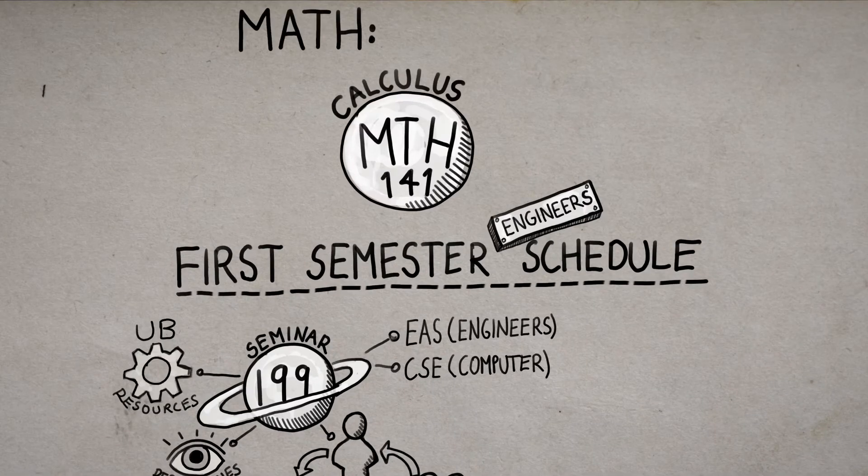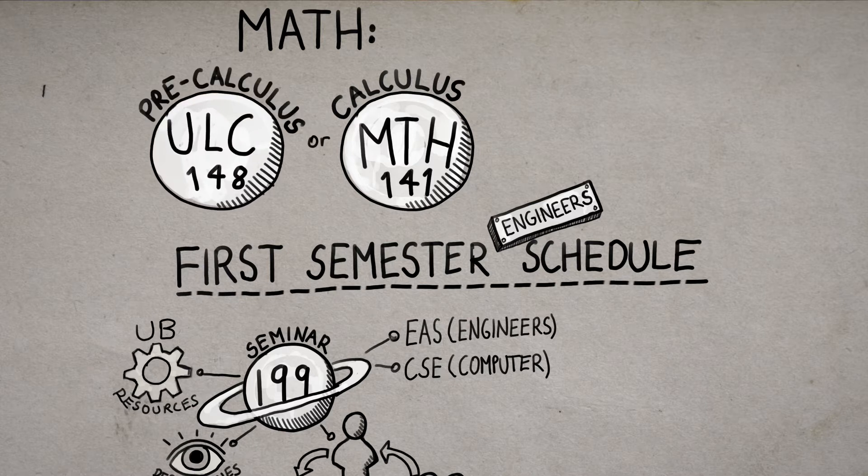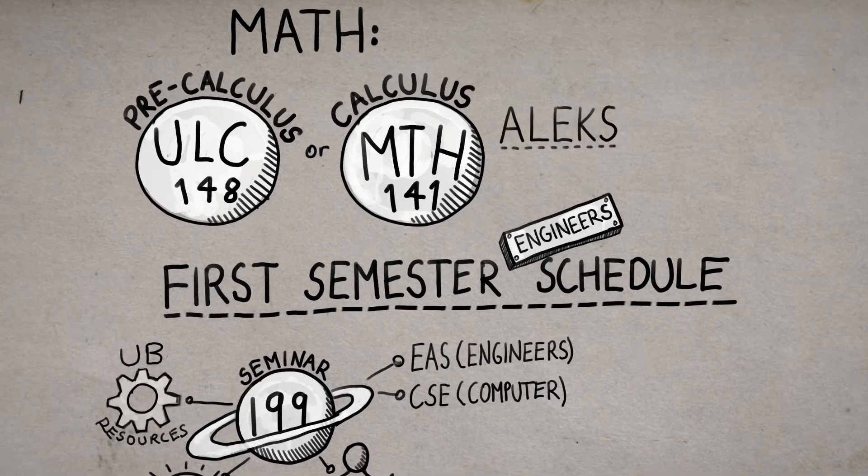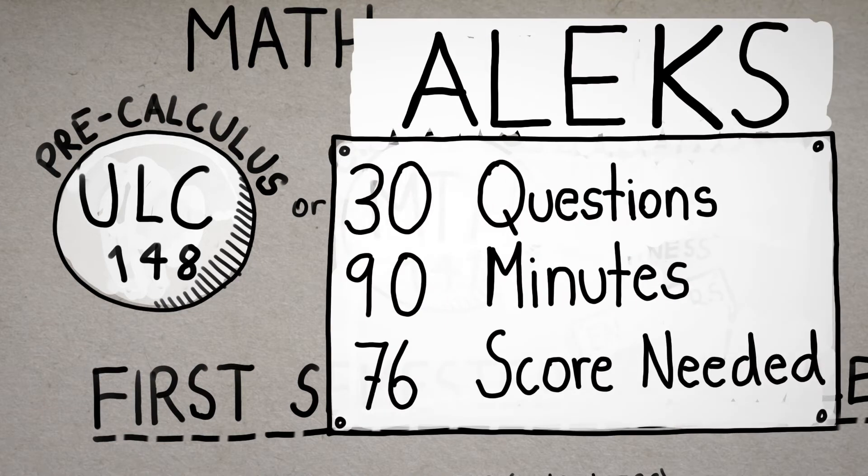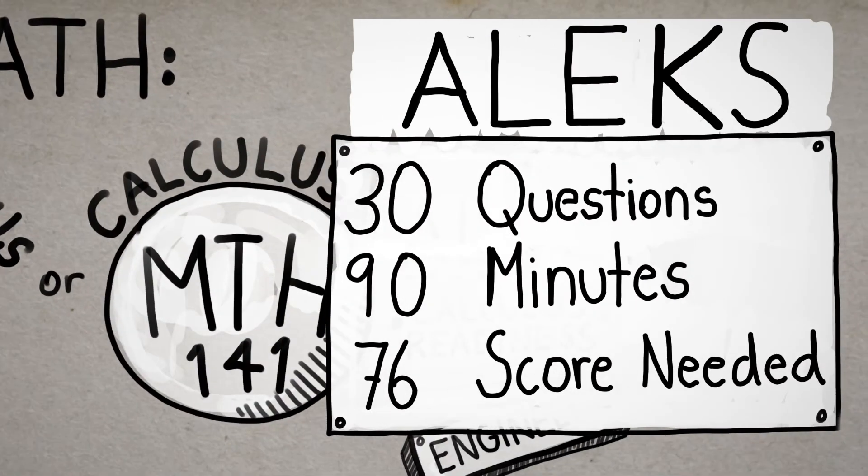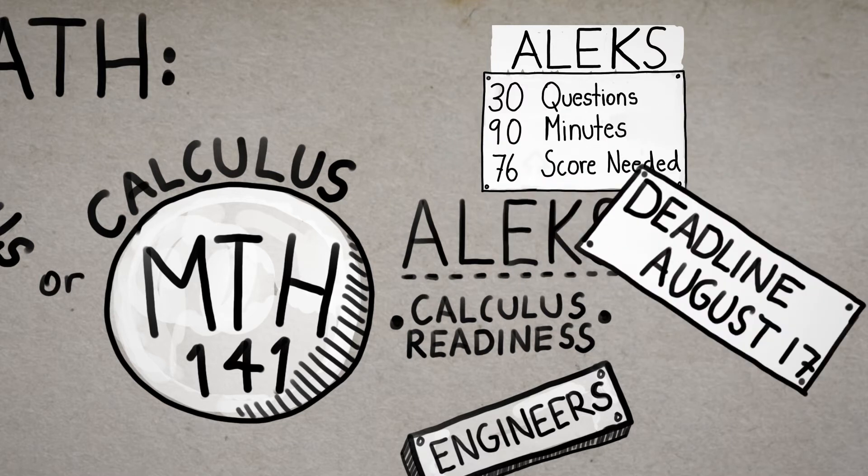Calculus 1 is the starting point for first semester Engineering and BS Computer Science majors. If you're not ready for Calculus 1 yet, we will place you into a Pre-Calculus class. Now to stay in Math 141, you must take the ALEKS placement exam to assess your readiness for calculus. It's a 30-question, web-based test that takes 90 minutes to complete. You need to score a 76 or higher to stay in Calculus 1. You have three tries. If you score below, we'll place you into Pre-Calculus instead. The deadline to complete ALEKS is August 17, 2020, at 8 a.m.